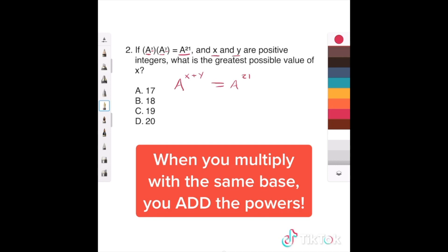And it says x and y are positive integers. Positive means that they are bigger than zero. And they're whole numbers, okay?